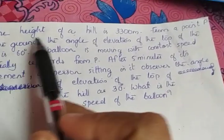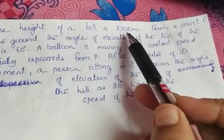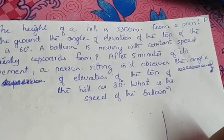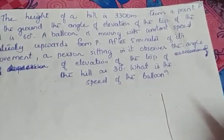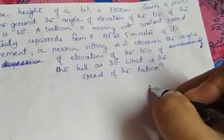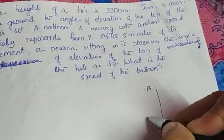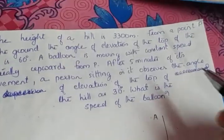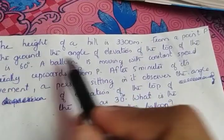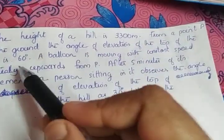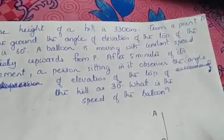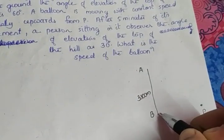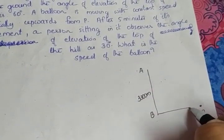The next question: the height of a hill is 3300 meters. We can draw the height — it will be the perpendicular level from the ground. I am marking height as AB, which is given as 3300 meters. From a point P on the ground, BP is the ground level.